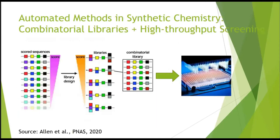Another great achievement in drug design has been the invention of automated methods in synthetic chemistry. Since 2003, this automation has allowed generation of large amounts of new compounds as combinatorial libraries and high-throughput screening — a thousand compounds could be tested per day this way.